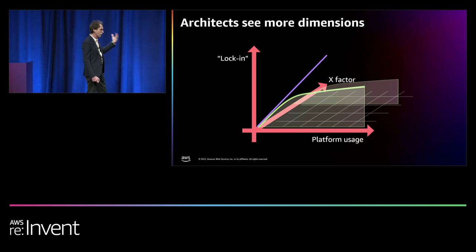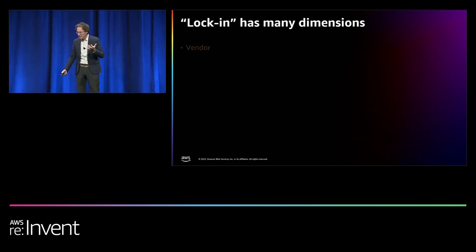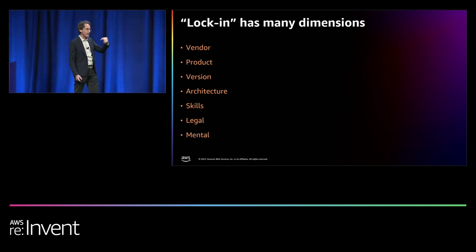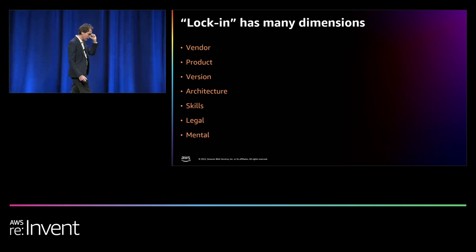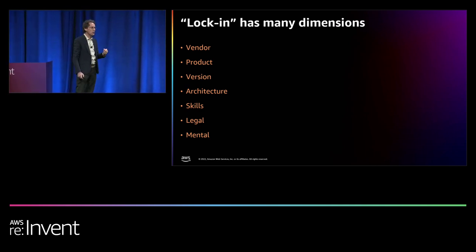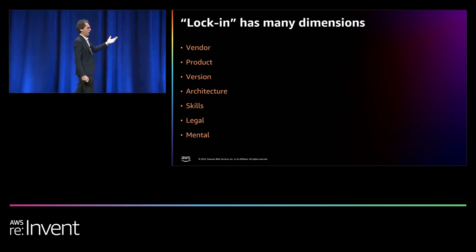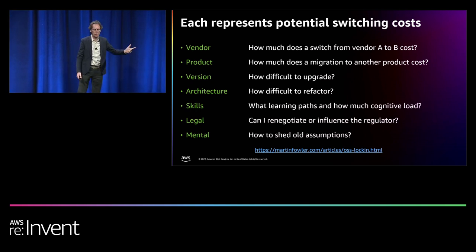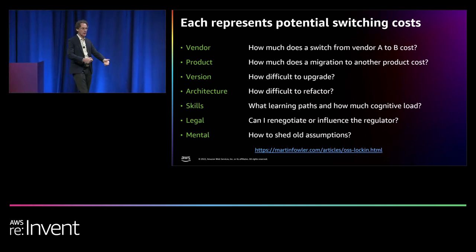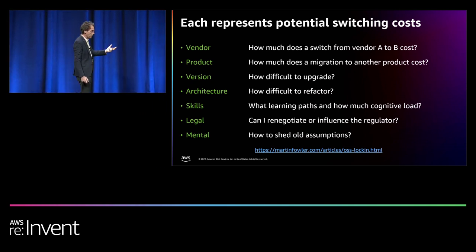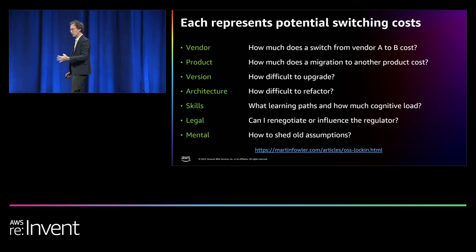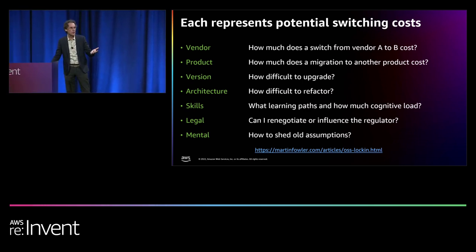Let me tackle the notion of lock-in. It's not a binary thing — it's not like Monopoly where you go to jail. It has many dimensions and gradations. There is vendor lock-in — it might be hard to switch from one vendor to another. But there's also product and version lock-in; I know organizations who spend double-digit millions just upgrading from one version of a commercial product to another. There are also architecture switching costs — even if you build the application yourself and control everything, it will not be free to change the architecture. The word 'lock-in' is somewhat misleading. We're really talking about switching costs: how much does it cost me to go from A to B? That will never be free.